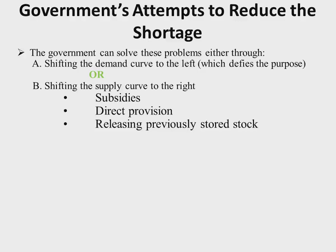Another option is a rationing scheme. The government may use coupons to impose the actual amount consumed in the market. For example, it may say no family is allowed to buy more than two bags of mealie-meal, rationing consumption of that commodity — which is typically done when quantities are in short supply.